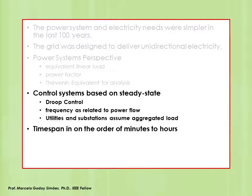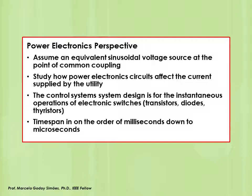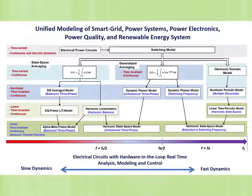From the power systems perspective, it is possible to discuss frequency variation as related to electrical power flow, and voltage variation as related to reactive power needs, and derive droop control for the power grid. From the power electronics perspective, the control system is usually concerned with equipment design, assuming an equivalent sinusoidal voltage source at the point of common coupling and improving how the equipment may or may not distort the current supplied by the utility. Instantaneous control requirements for power electronics systems are designed for proper operation in a short time span, typically milliseconds and microseconds.